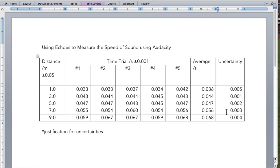One last thing I want to point out is when you go through and you do this, I always suggest that at the bottom of your table you put a justification for your uncertainties. So, for example, with the distance, I said it was measured by a trundle wheel.